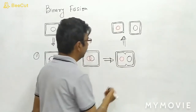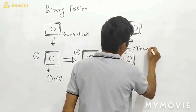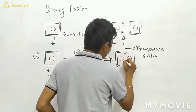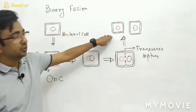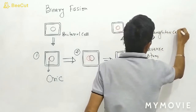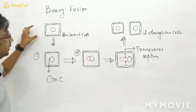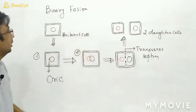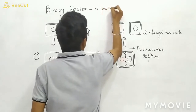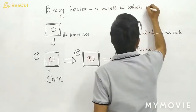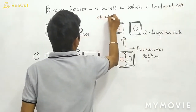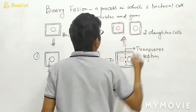In the third step, you can see there is a transverse septum. Formation of the transverse septum — and this invaginates from both sides. After that, in the last step, you can see that two daughter cells are formed. So we started from one bacteria and we ended with two daughter cells. Based on this diagram, we can define binary fission as a process in which a bacterial cell divides and forms two daughter cells.